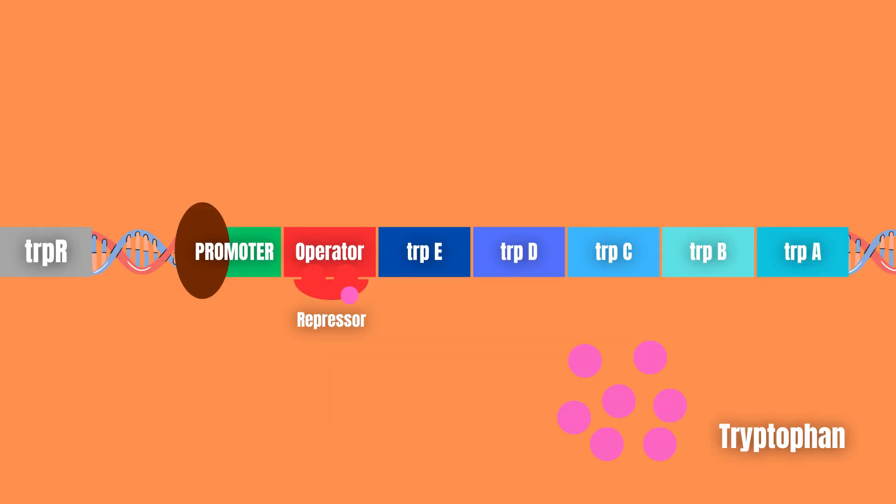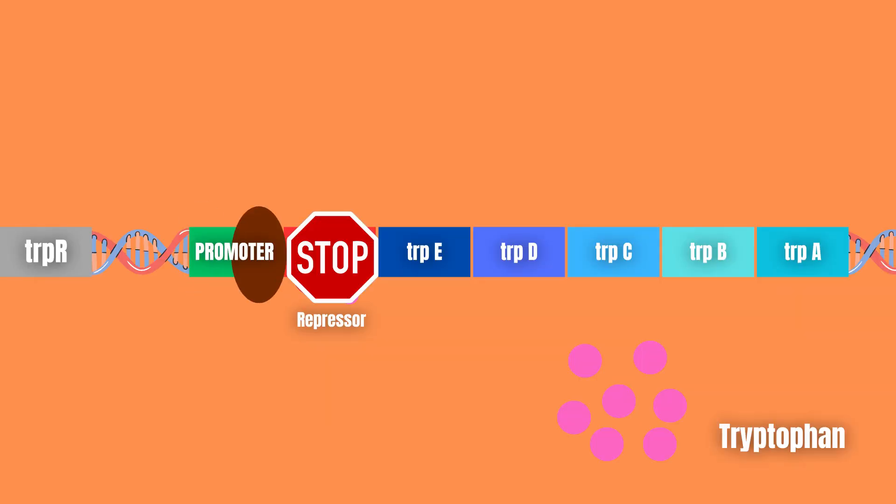Now RNA polymerase can no longer transcribe the genes, ultimately stopping the production of tryptophan in the cell. We now call the operon repressed, as it is no longer expressed.